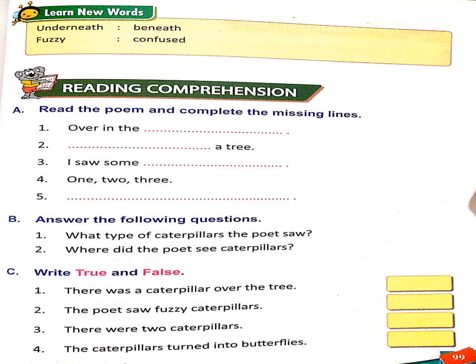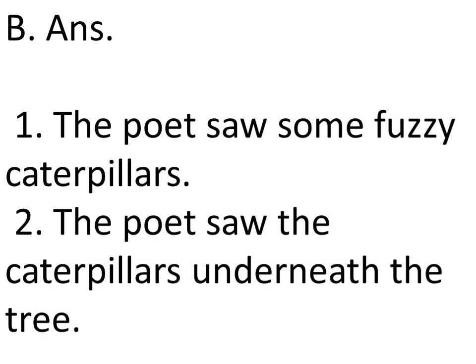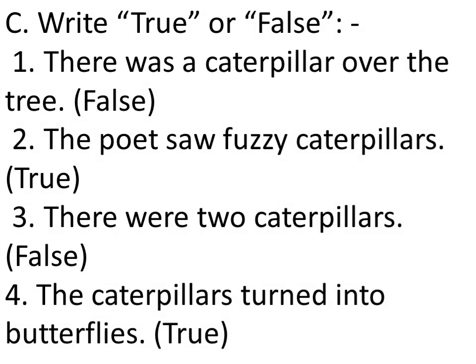Now you can see the new words — these new words you have to write in your notebooks and learn. This is your reading comprehension: you have to read the poem and complete the missing lines, so you have to write them. For question B, question number one and question number two answers are also there. For question C, you have to write true or false — I have given the answers, you have to complete it.